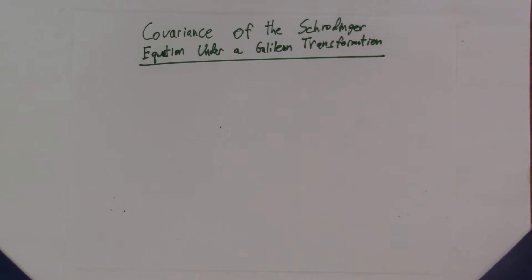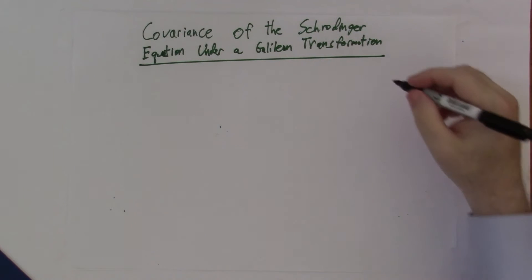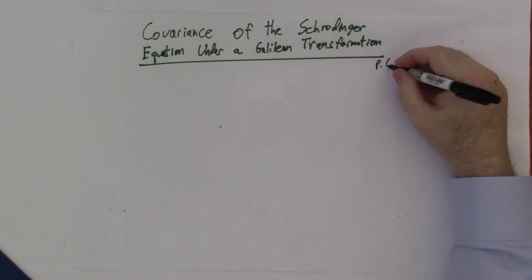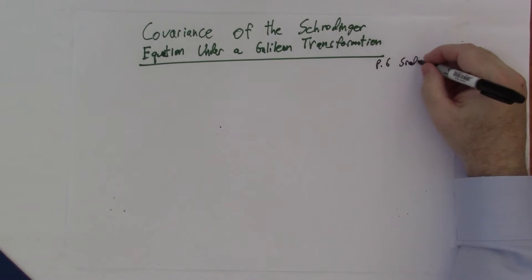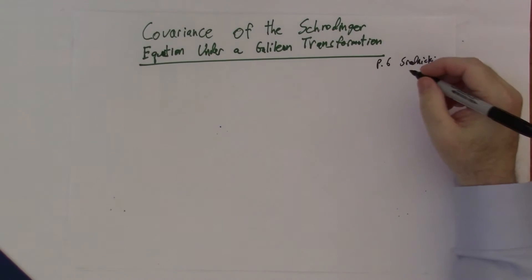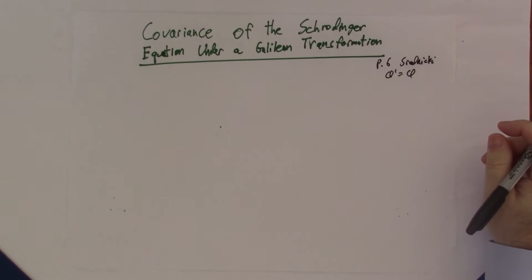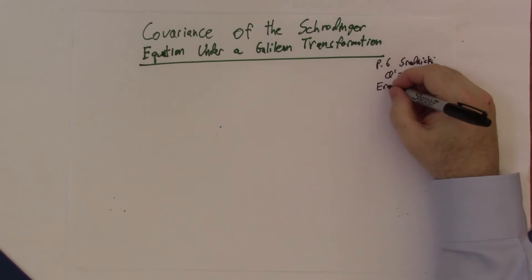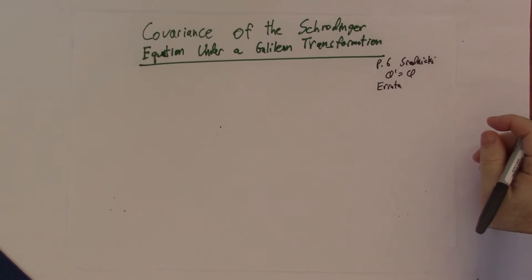The reason I want to discuss this is that on page six of Mark Srednicki's book, he discusses transformations between reference frames and implies that the scalar transformation is what you want for a one-component object. But if you look at the errata, they point out this is only one of the simplest choices, that there are other choices,